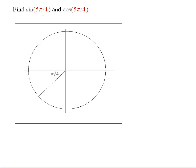I want to find the values of the sine of 5 pi over 4 and cosine of 5 pi over 4. To do this, draw a unit circle and determine what point on the unit circle corresponds to this value.